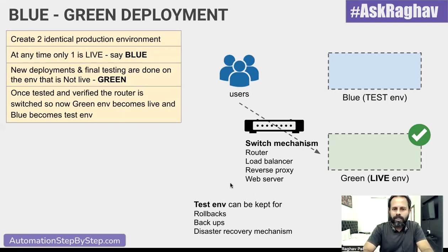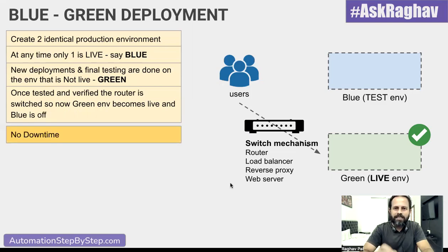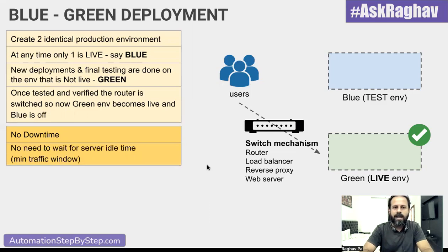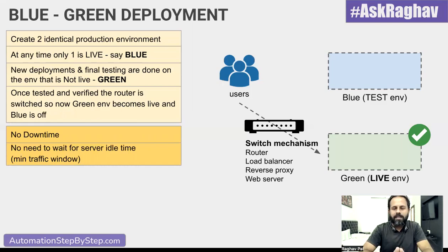This is how blue-green deployment works. A very important advantage is that there is no downtime — users can be switched and if anything goes wrong, we can switch them back to the other environment. There is also no need to wait for server idle time or a minimum traffic window to do deployments. Without blue-green deployment, we generally choose a time when the fewest users are active, but in this case we don't have to wait for that.